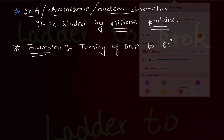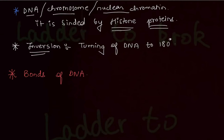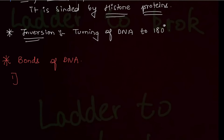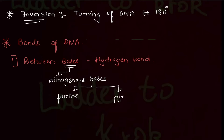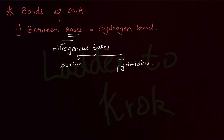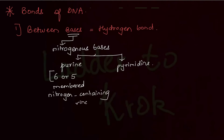Now let's know about the bonds of DNA. For DNA to be formed, there are three important bonds. First, between bases there are hydrogen bonds. Bases are nitrogenous bases, which can be either purine or pyrimidine. Purines have a six and five membered ring, whereas pyrimidines have only a six membered nitrogen-containing ring.